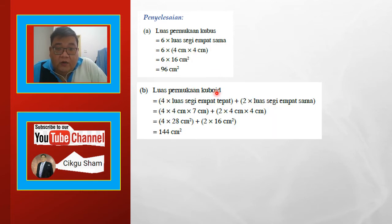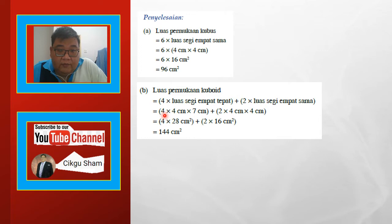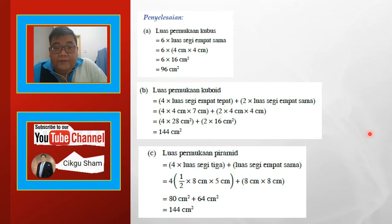Kuboid — dia ada luas segi 4 tepat dan ada segi 4 sama. Segi 4 tepat ada 4, segi 4 sama ada 2. Jadi luas segi 4 tepat: 4 darab 7 darab 4. Luas segi 4 sama: 2 darab 4 darab 4. Selesaikan, dapat 144.